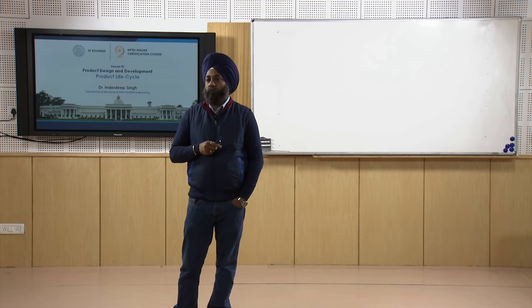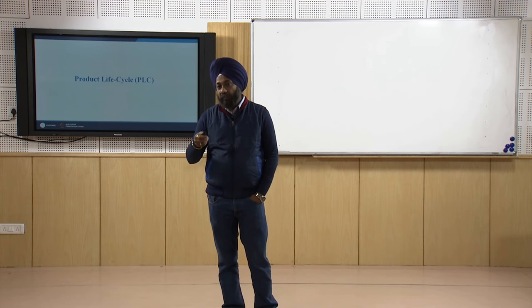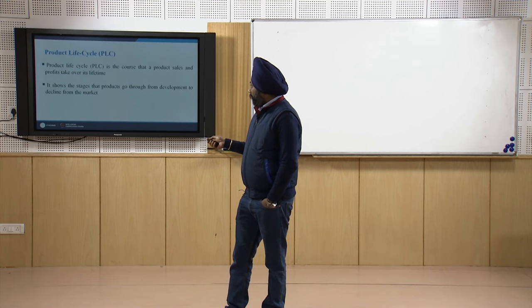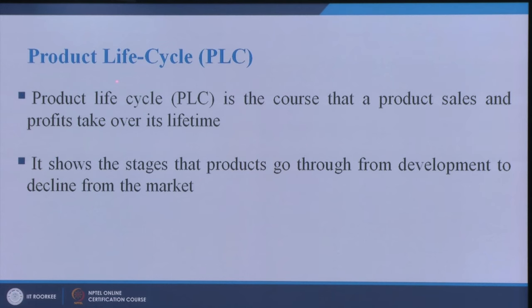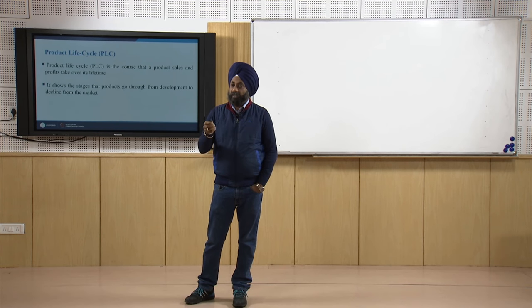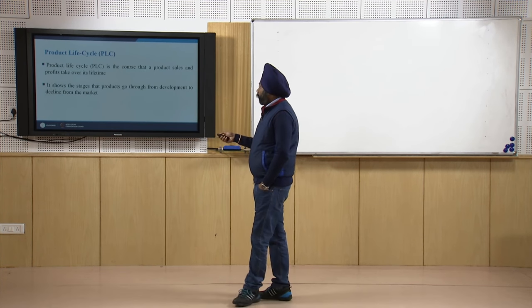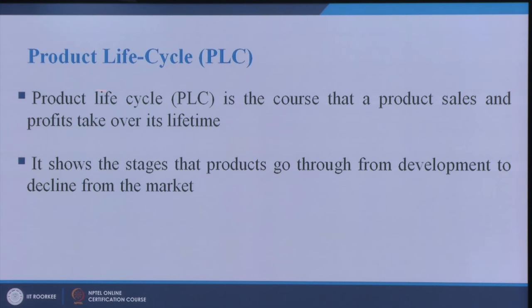We will try to understand how these phases influence the various strategies and decisions of any organization involved in producing products for making profits. The product life cycle is the course or trajectory that a product's sales and profits take over its lifetime. We will see with the help of a diagram how product sales vary with respect to time, and what are the various phases of the product life cycle. It also shows the stages that products go through from development to decline.